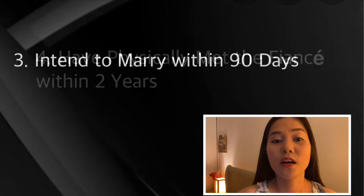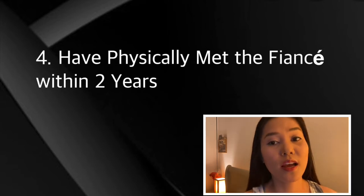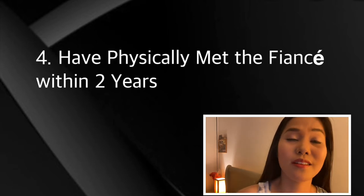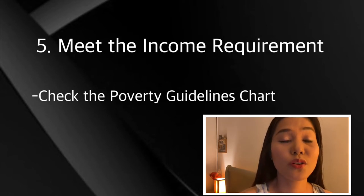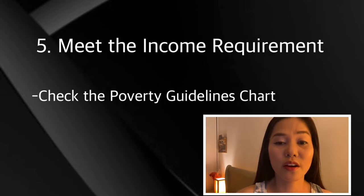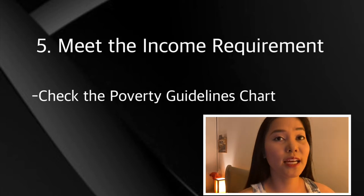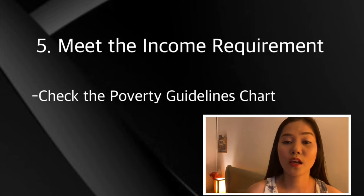Number four, the couple must prove that they have physically met in person at least once within the last two years. This doesn't mean they need to know each other for two years, just that within the last two years they have met. Number five, meet the income requirement. The U.S. citizen petitioner must disclose his or her financial ability, to show that the petitioner earns enough money to support the immigrating fiancé or fiancée and to prevent him or her from becoming a public charge. You can check the poverty guidelines chart to determine the minimum financial requirements for a K-1 fiancée visa.